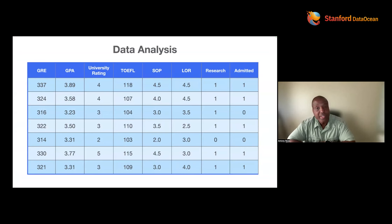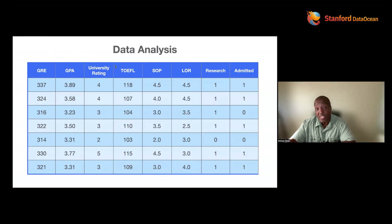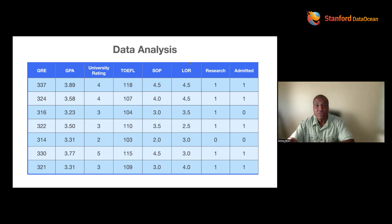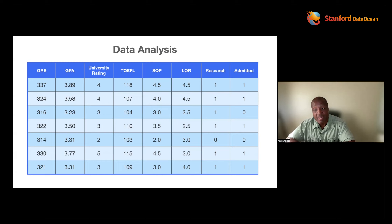Here's a different dataset where we're going to predict if someone will get admitted into graduate school. We have a person's GRE score, their GPA, the quality of the university they're applying from, a TOEFL score, their statement of purpose, their letter of recommendation, whether they've done any research in their undergraduate program, and who's been admitted. The machine says, what question are you asking? I want to know if someone will get admitted — that's the target variable.